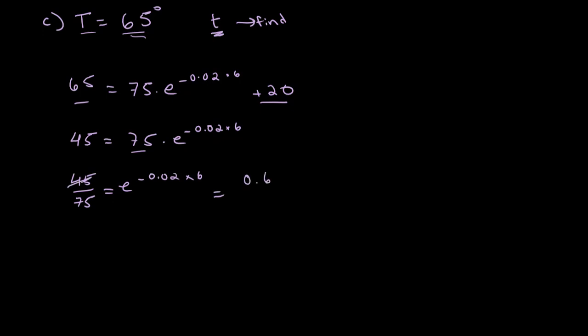You can take out 5 from both places. That gives us 9 and 15. And this is equal to 0.6. Because if we take 3 from both sides, we get 3 over 5, which is 0.6.